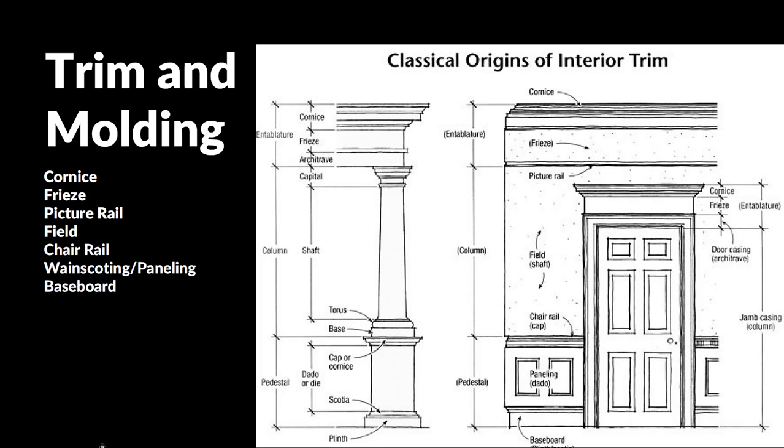Starting up at the top, we have this idea of the entablature with that frieze and the cornice. We have the whole field of the wall, which is much like the shaft of the column. The cornice and the frieze can also be found at the top or the header of the door. And if we have a wainscoting situation with the baseboard, the paneling, and the chair rail, that's really like the base of the column. So they're very directly related.